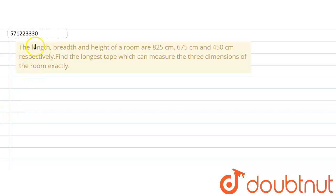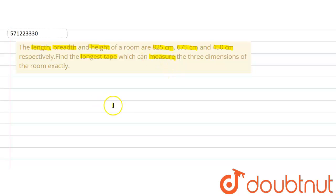The given question says that the length, breadth and height of a room are 825 cm, 675 cm and 450 cm respectively. Find the longest tape which can measure the three dimensions of the room exactly.